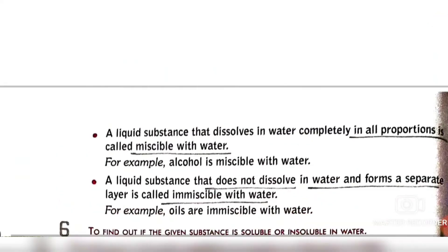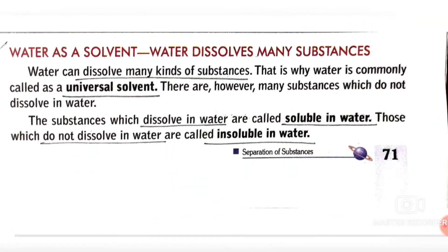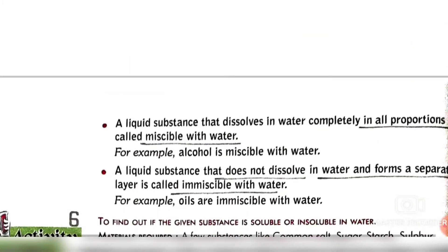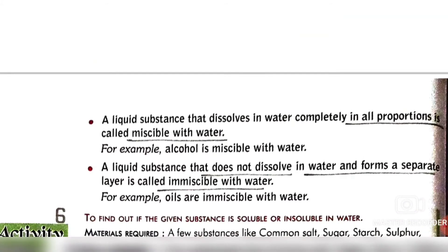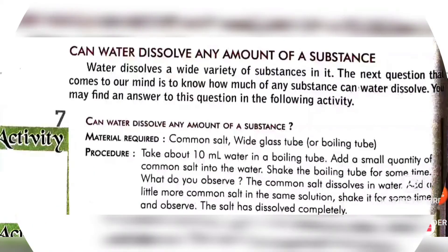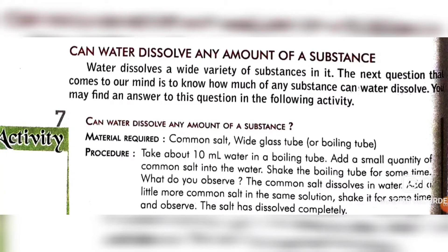To summarize: solids which are completely soluble are called soluble, and those which do not dissolve are insoluble. Liquids which dissolve completely are miscible, and those which do not dissolve are immiscible. So we have learned that water dissolves a wide variety of substances in it.